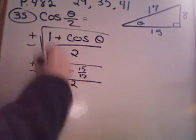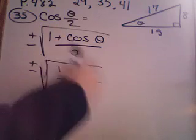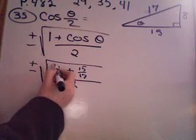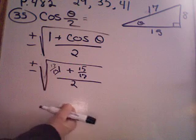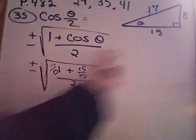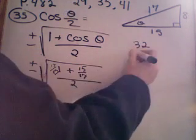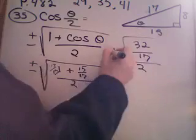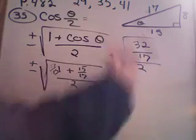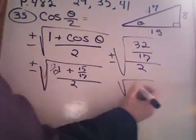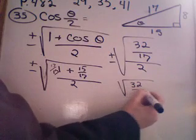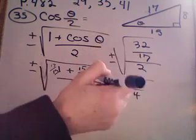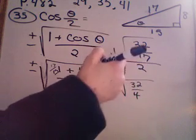Whole thing under the radical here. Now, I need to combine this for like terms, so let's make this 17 over 17. So, now I'm going to get 32 over 17 all over 2 underneath this radical. Can I rewrite that as 32 over 4? Right?